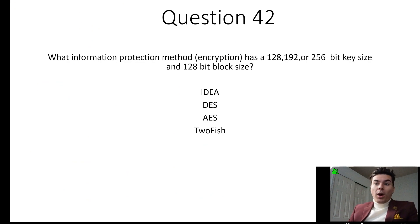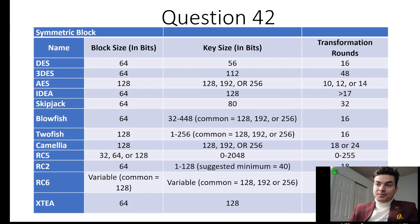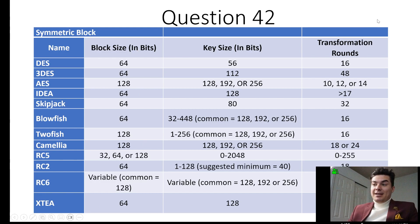Question 42: What information protection method encryption has 128, 192, or 256-bit key size and a 128-bit block size? That is AES. We're going to take a look at the other options. One thing about the block sizes and the key sizes is that there's really no special technique to remember all of this information — you just have to know all of these block sizes and key sizes.